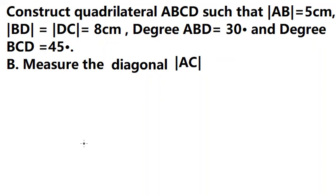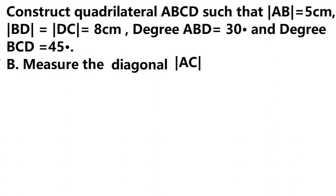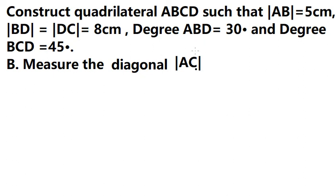Hello everybody. Today I will talk about geometry. The topic today is about quadrilaterals. I will show you how to answer. We need to construct the quadrilateral ABCD. We have the length of AB is about 5 centimeters, BD and DC are 8, the degrees of ABD is about 30 degrees, and the degree of BCD is 45 degrees. We want to find AC.